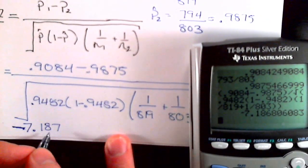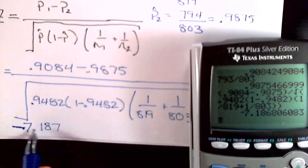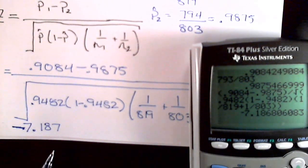So it's negative 7.187, so really extreme test statistic here, very small p-value.